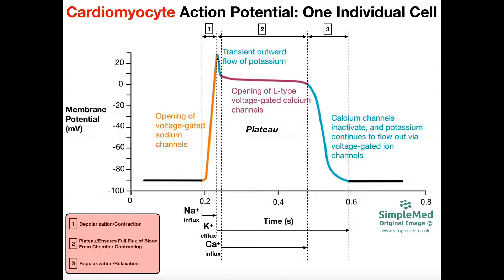When the membrane potential gets to about positive 30, that's going to trigger the sodium channels to close. Then we get the opening of voltage-gated potassium channels — notice their opening for a very short amount of time, at least the short time where they're the only ones open. When potassium channels are open, potassium effluxes out of the cell, moving positive charges out, so the inside of the cell gets more negative, which is why we see the membrane potential fall a little bit.